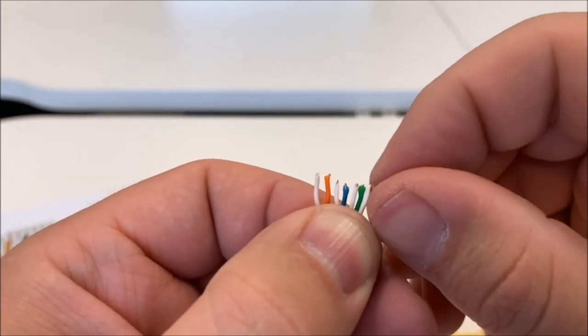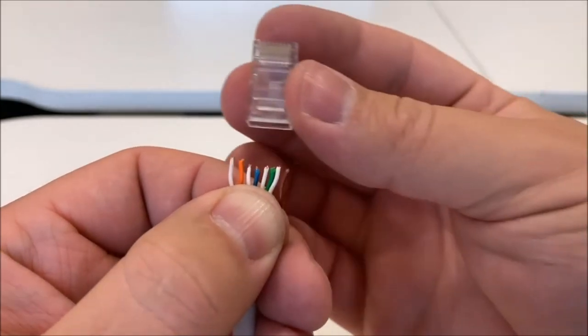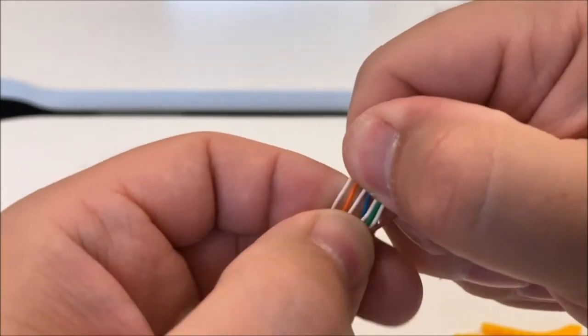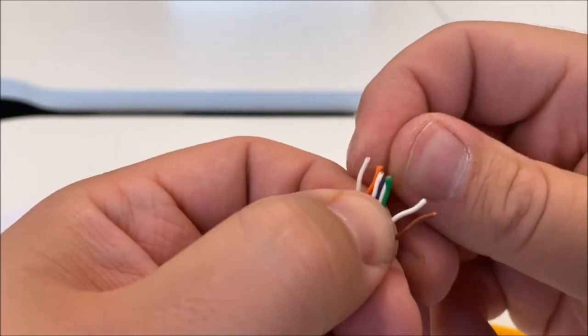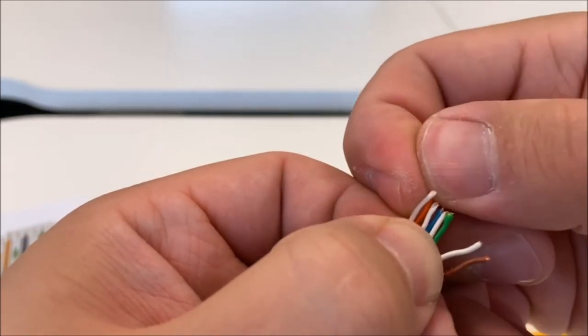And then I need the solid green. I'll bring that one over. Up here I need the white-brown and the brown. Now at the moment, they're not going to fit into this yet because they're too wide. So what we need to do is basically just straighten them out, flatten them out.